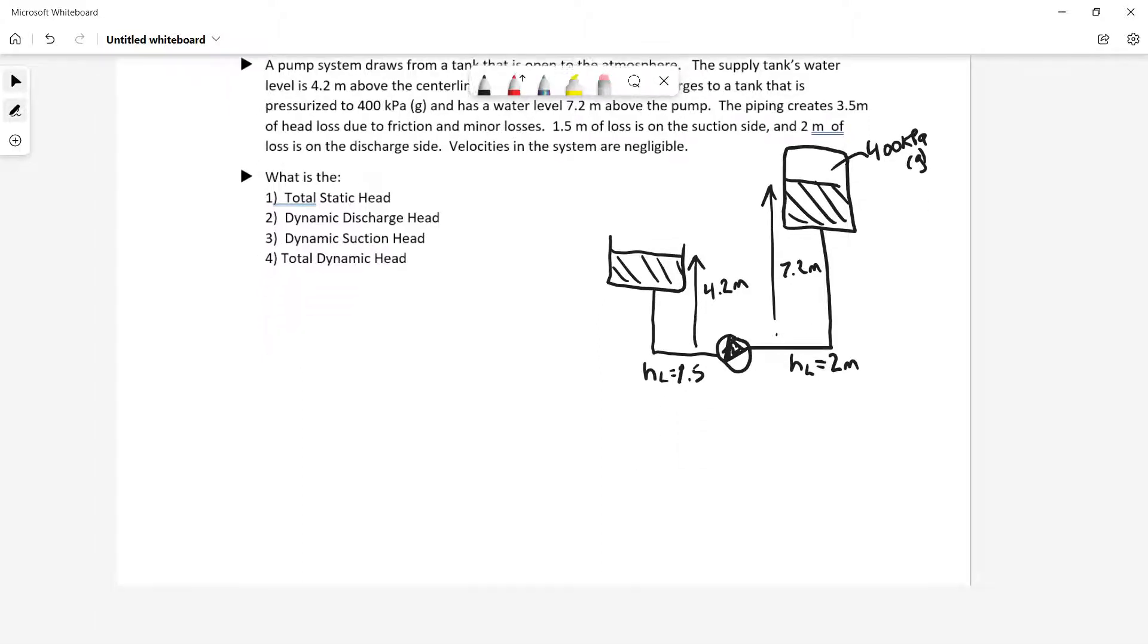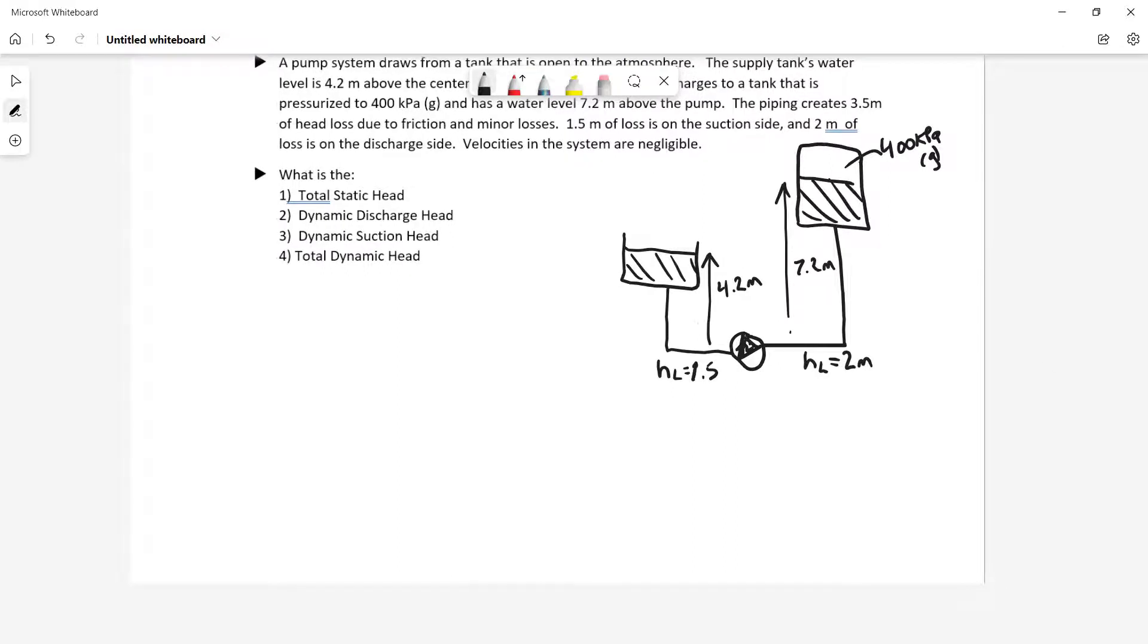So first one is the total static head. Now, let's not forget that because we have a pressurized tank, we're going to have to consider that when we calculate our total static head. So our total static head is going to be equal to the height that we have to discharge the water to. So if we consider this to be my point number 2, and I guess my point number 1, what I have is my Z2, the height at 2, plus the column of water equivalent to the pressure in that tank, so pressure 2 over rho times G, minus the height of the supply tank, Z1.